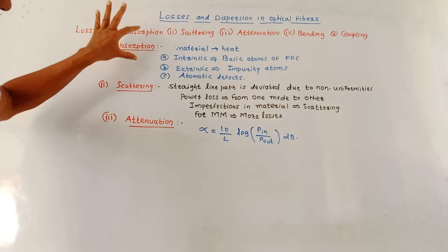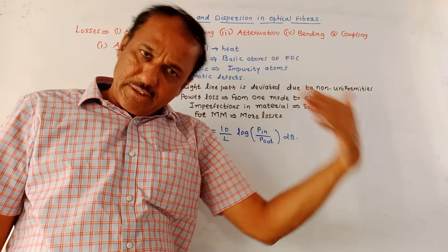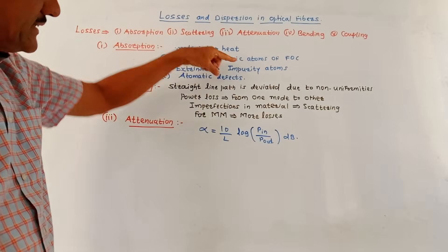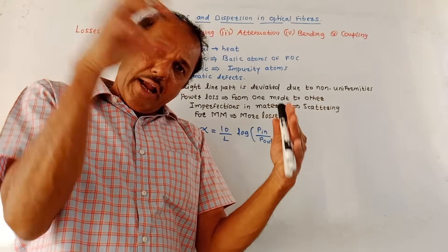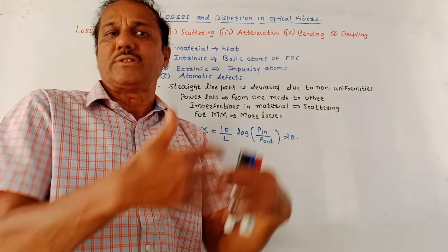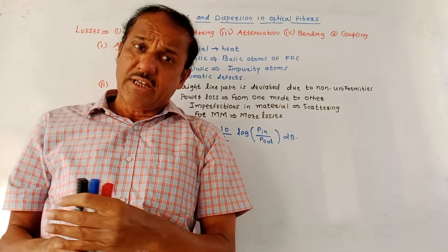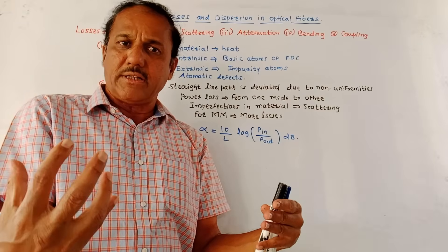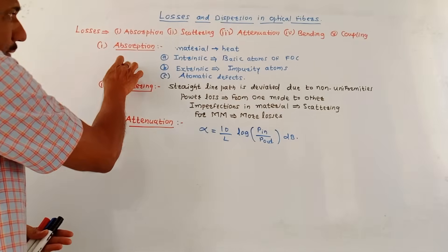There are three subtypes of absorption loss. First is intrinsic absorption, which is due to the basic atoms used in the fiber optic cable. Second is extrinsic absorption, which is due to impurity atoms added during manufacturing that cause absorption of incoming photons. Third is atomic defects — certain atomic defects in the material cause further absorption and heat production.